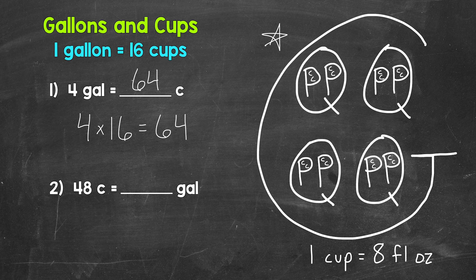Let's move on to number two, where we have 48 cups equals how many gallons? So cups to gallons here. Well, each group of 16 cups equals a gallon. So how many groups of 16 cups in 48 cups? We need to do 48 divided by 16. So we divide here. When we go from cups to gallons, we divide by 16.